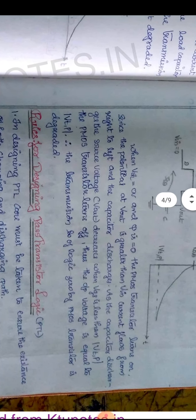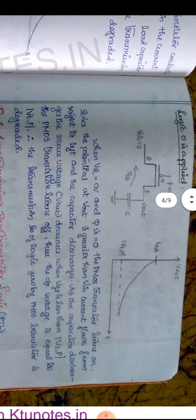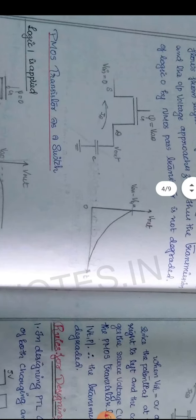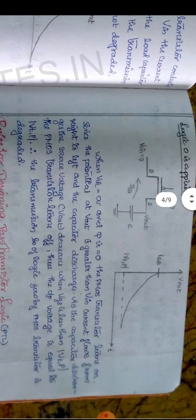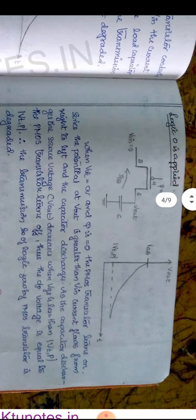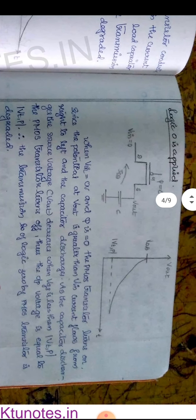Now logic 0 is applied at the source terminal. In this case, psi is equal to 0 at the gate, and the logic 0 — that is, 0 volts — is applied at the source. The logic 0 input may be the drain depending on current direction. We need to consider what happens as this logic 0 is applied at the source.